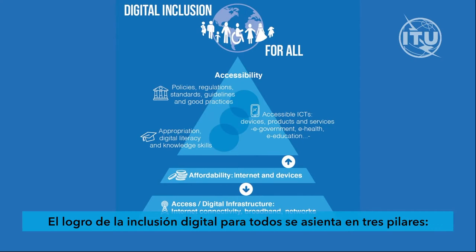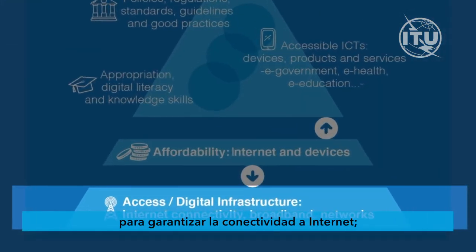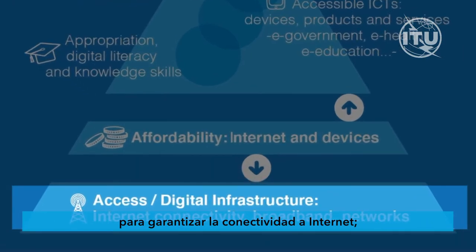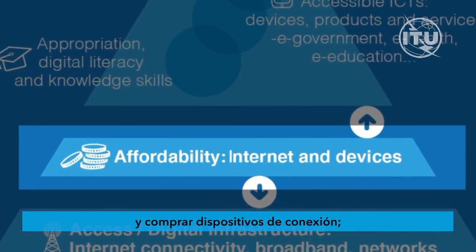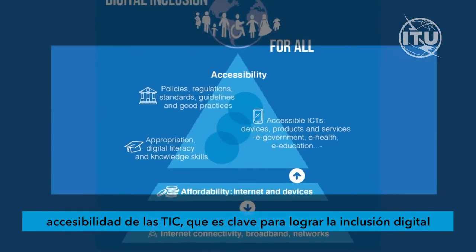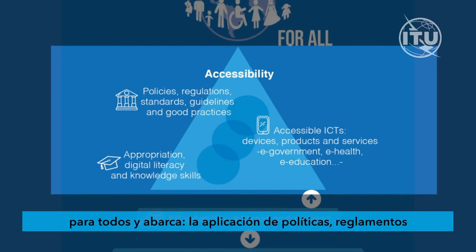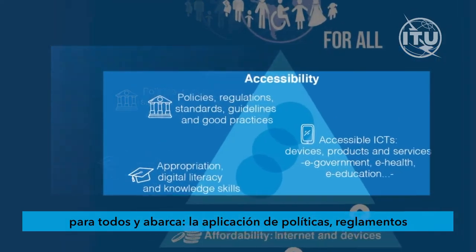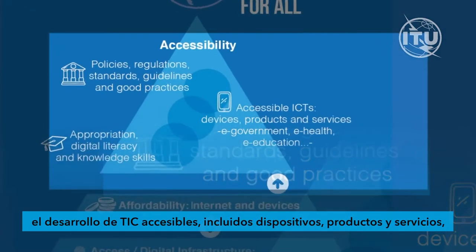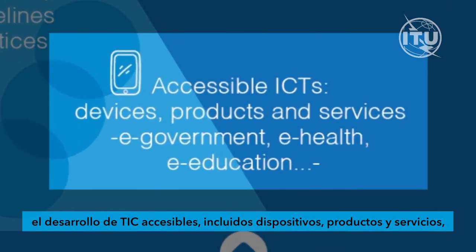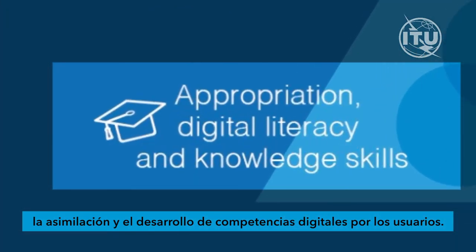Three building blocks are needed to achieve digital inclusion for all. First, access and digital infrastructure to ensure internet connectivity is in place. Second, affordability, so that users can afford internet access and buy devices to connect. Third, accessibility of ICTs, which is key to fulfilling digital inclusiveness for all people, and encompasses implementation of ICT accessibility policies, regulations, and standards, development of accessible ICTs including devices, products, and services, and appropriation and digital knowledge skills by all end users.